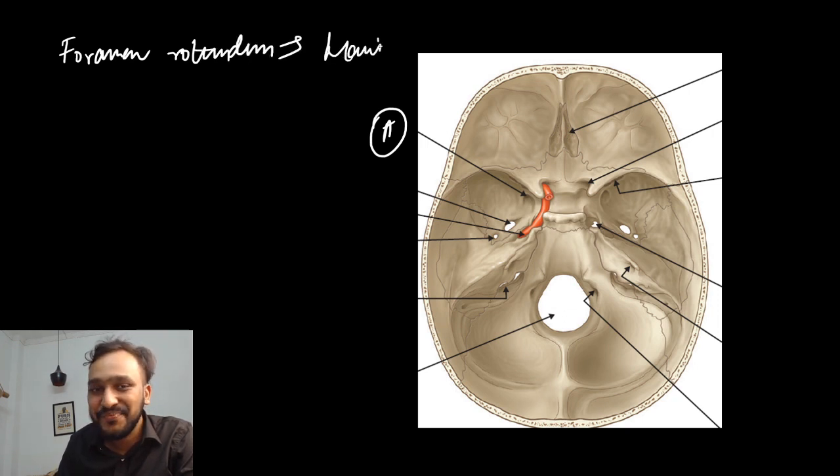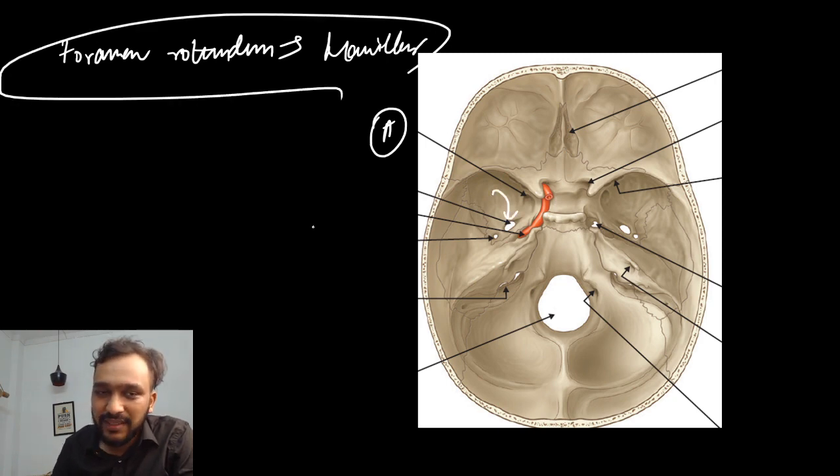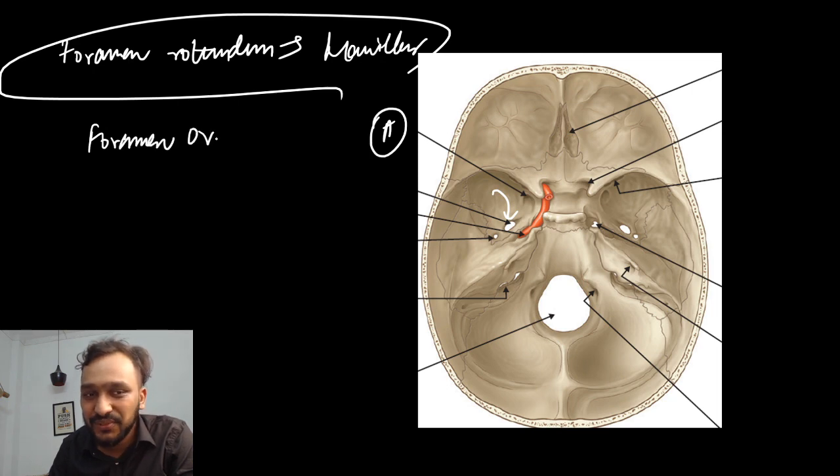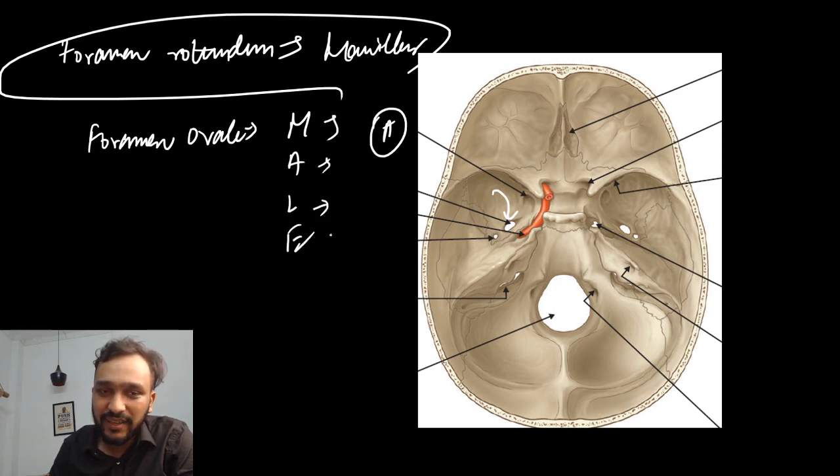And this oval shaped foramen is your foramen ovale. The structures passing through foramen ovale can be remembered with the simple mnemonic MALE: M for mandibular nerve, A for accessory meningeal artery, L for lesser petrosal nerve, E for emissary vein.